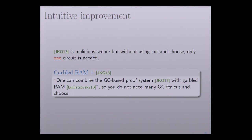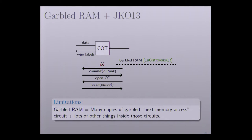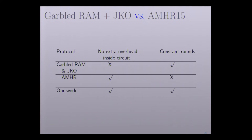An intuitive improvement is to combine the JKO protocol with the garbled RAM from the paper by Lu and Ostrovsky, 2013, so we don't have to generate many garbled circuits for cut-and-choose. Instead of using a garbled circuit, we replace it with the garbled RAM. But this improvement also has limitations, since the garbled RAM requires many copies of the garbled next-memory-access circuit and lots of other overhead inside those circuits. In this table, the garbled RAM with JKO has constant rounds but requires extra overhead inside the circuit, while AMHR has no extra overhead but the number of rounds is proportional to the RAM program.